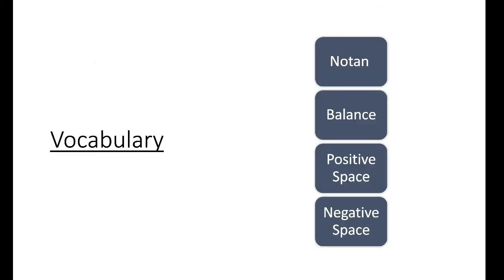The vocabulary we learned about art today: Notans — the balance of light and dark, which is also a Japanese philosophy of art. Balance — having equal amounts of light and dark. Positive space — the main idea. Negative space — the background, or everything around the main idea.